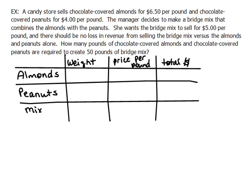In the last video I ran out of time, so I wasn't able to completely solve the problem, so I went ahead this time and started setting up the table to begin with. A candy store sells chocolate covered almonds for $6.50 per pound and chocolate covered peanuts for $4 per pound. The manager decides to make a bridge mix that combines the almonds with the peanuts. She wants the bridge mix to sell for $5 per pound with no loss in revenue. How many pounds of each are required to create 50 pounds of bridge mix?